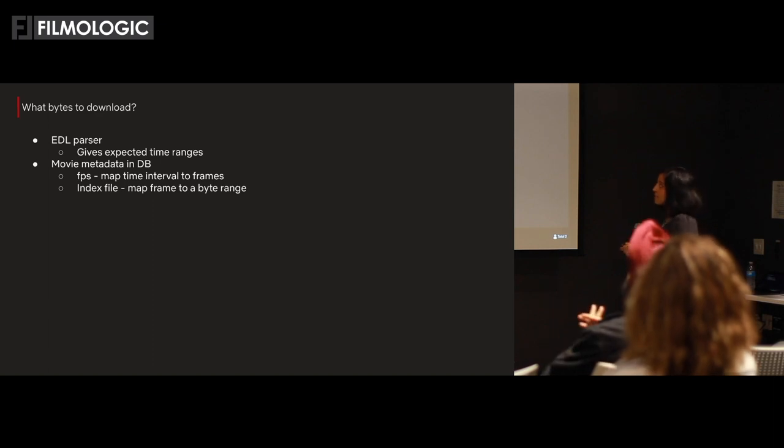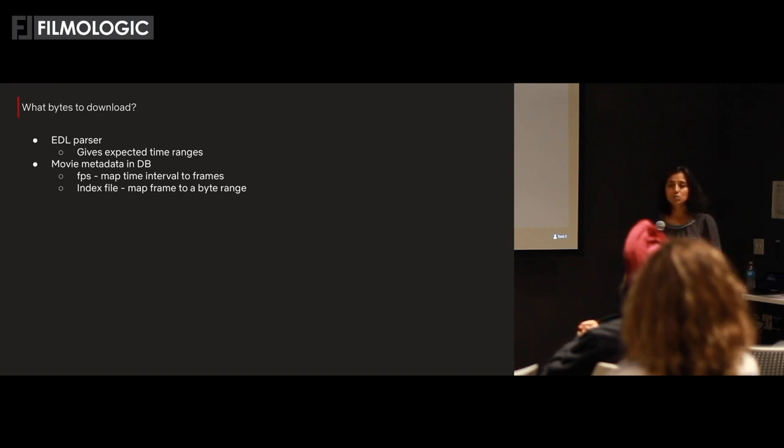When media comes into our system, we inspect it — verifying the source is valid, checking for issues, and collecting metadata like runtime, file size in bytes, and FPS. FPS in particular helps us map timelines into frames. The second half of the problem is mapping frames into byte ranges, which is solved using an index file generated during the inspection process. This index file maps frames to byte offsets, so we can map timelines all the way down to byte ranges.